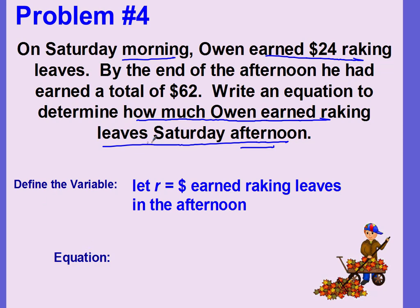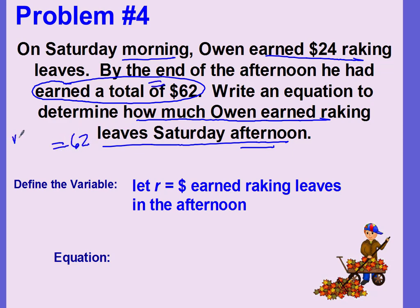Now write your equation. We're looking for the afternoon amount — that is unknown. The total is $62, which is our equals amount. What he made in the morning plus what he made in the afternoon equals 62. So our equation is 24 plus r equals 62.